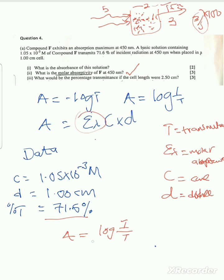The T in the formula is the transmittance as a decimal, not the percentage transmittance. Since we have been given 71.6 percent transmittance, we divide by 100 to get the transmittance: 71.6 divided by 100 equals 0.716.